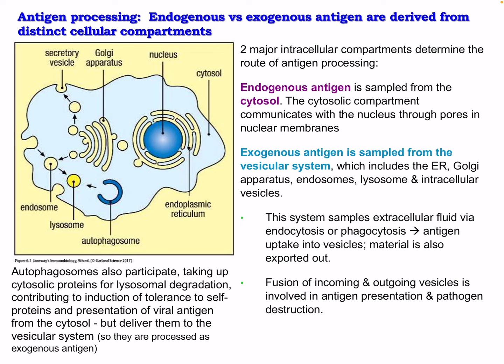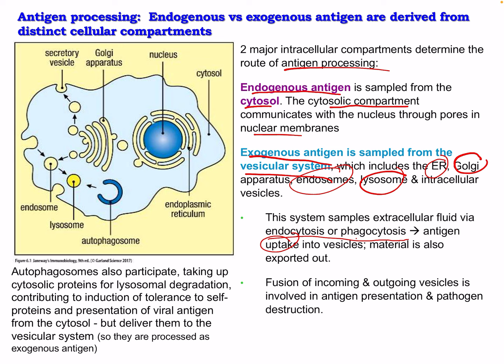Endogenous and exogenous antigens are derived from distinct cellular compartments. There are two major intracellular compartments that determine the route of antigen processing. The endogenous antigen is sampled from the cytosol, which communicates with the nucleus through pores and nuclear membranes. The exogenous antigen is sampled from the vesicular system — including the endoplasmic reticulum, Golgi apparatus, endosomes, lysosomes, and intracellular vesicles. This system samples extracellular fluid via endocytosis or phagocytosis, resulting in antigen uptake into vesicles.